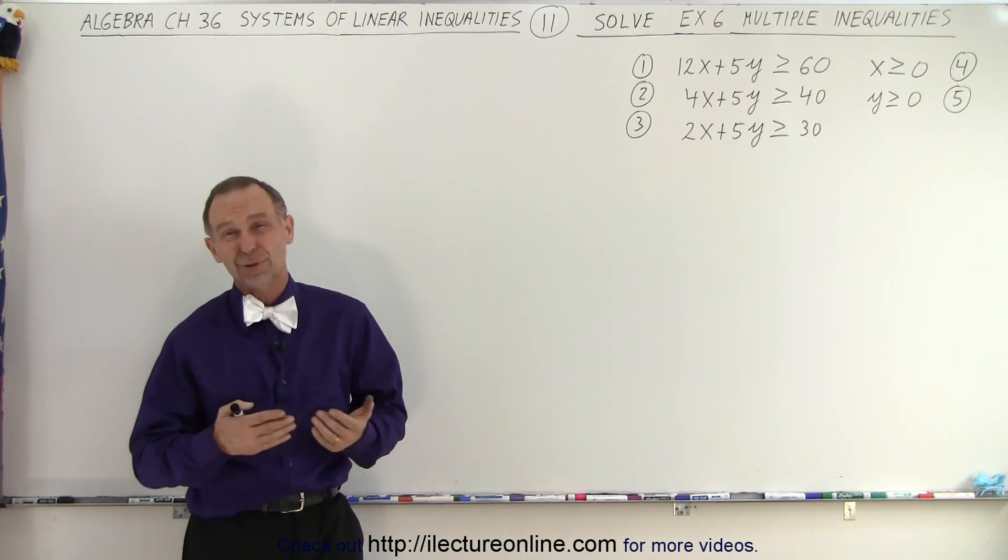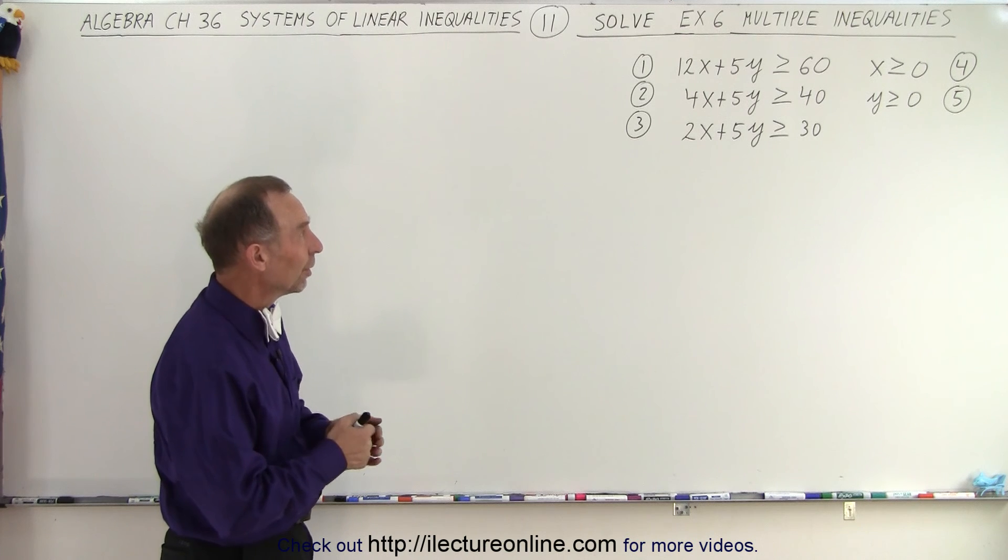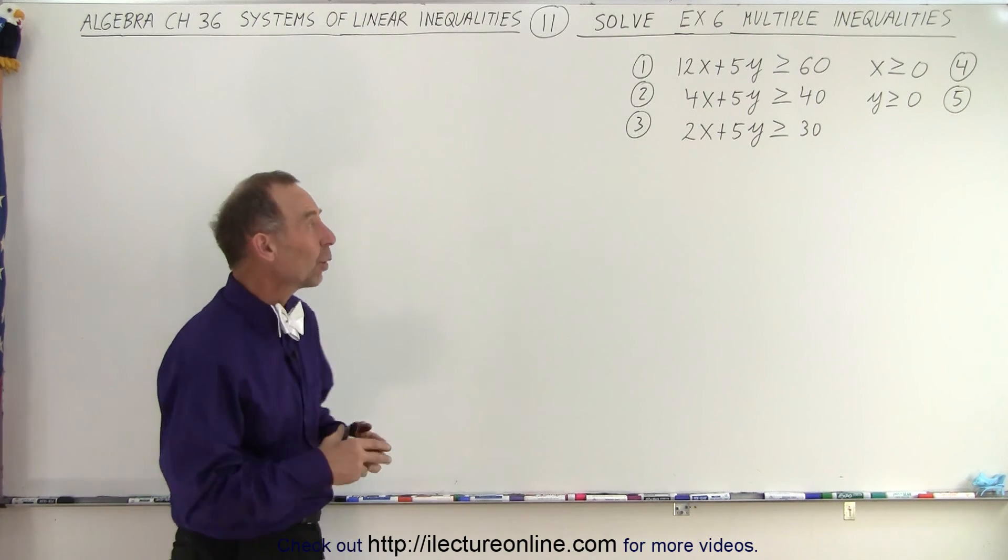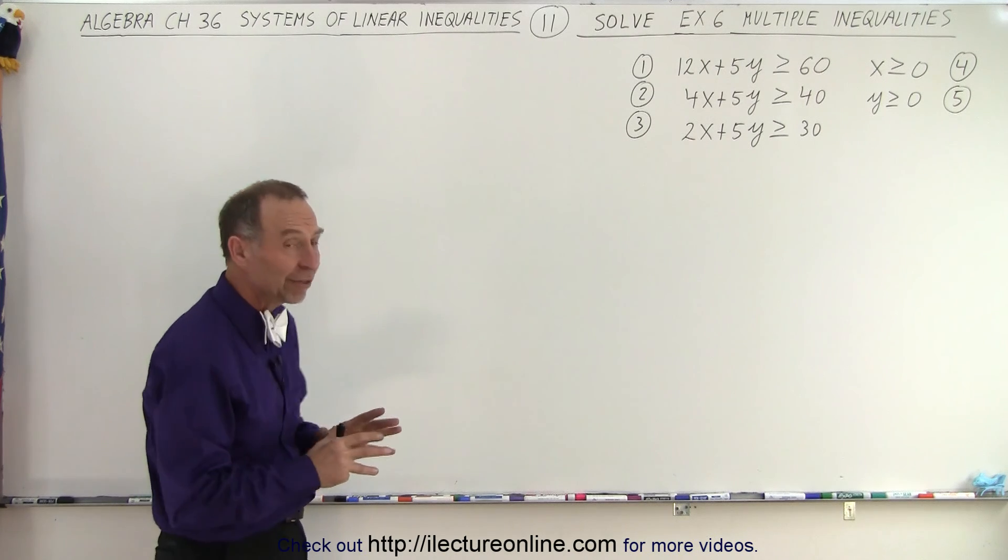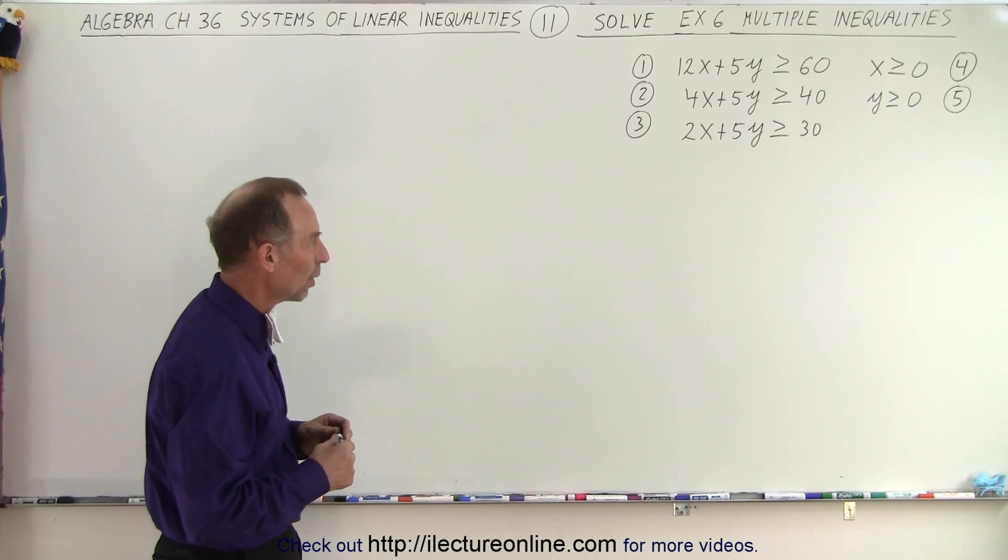Of course, the last two are the usual x must be greater than zero and y must be greater than zero, but the first three now form a combination of three inequalities that we somehow have to graph and find a region that satisfies all of these five inequalities.